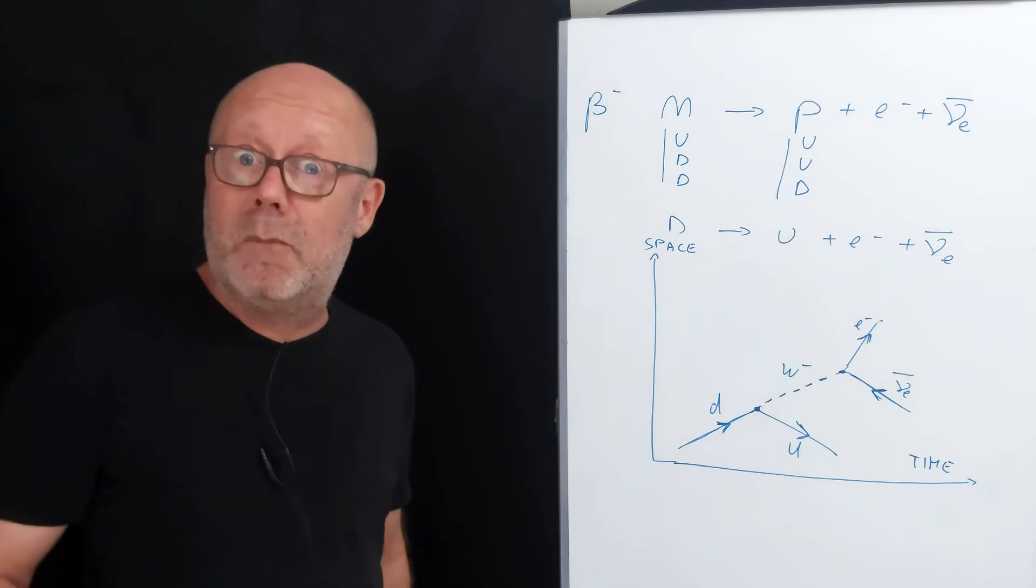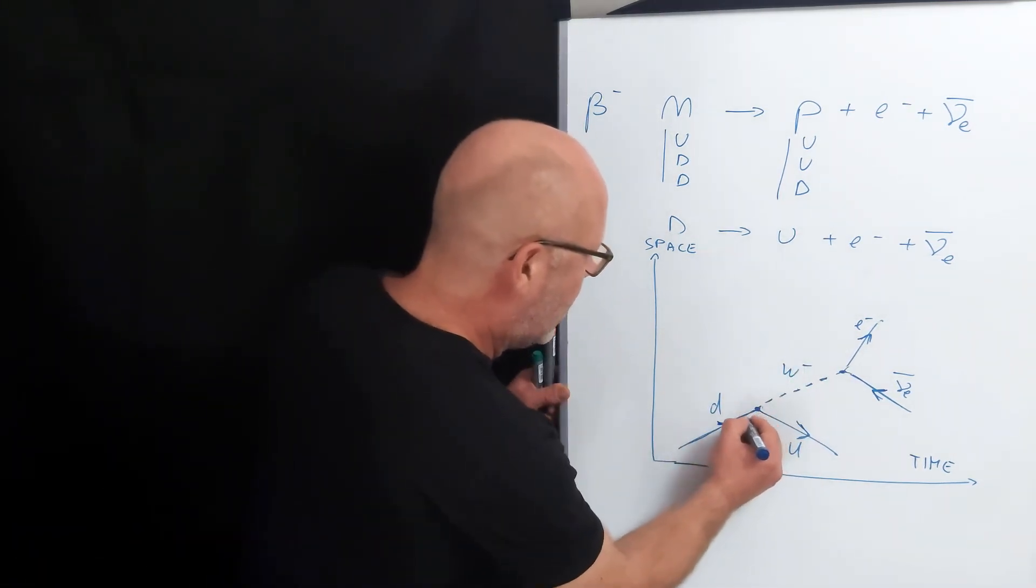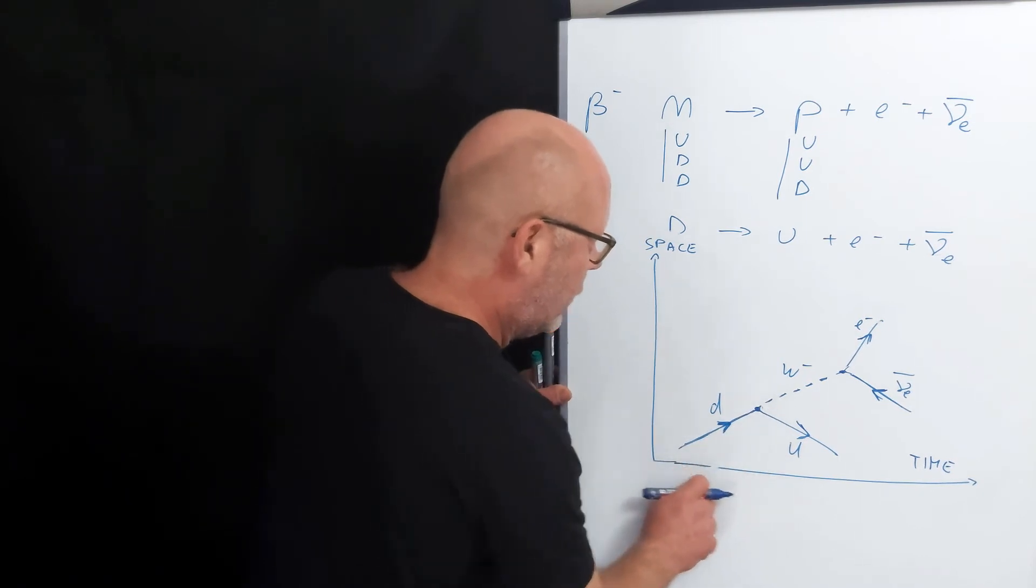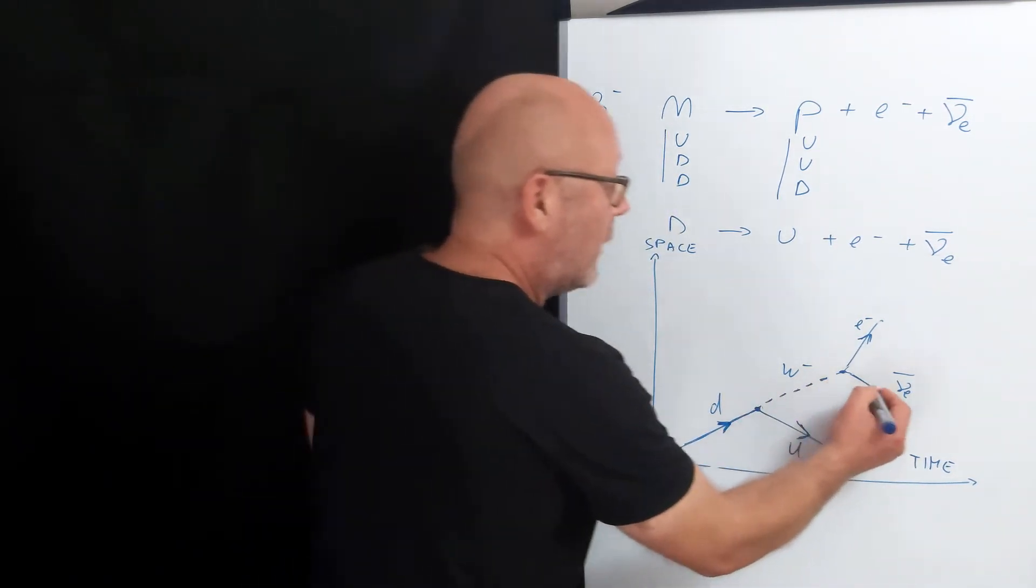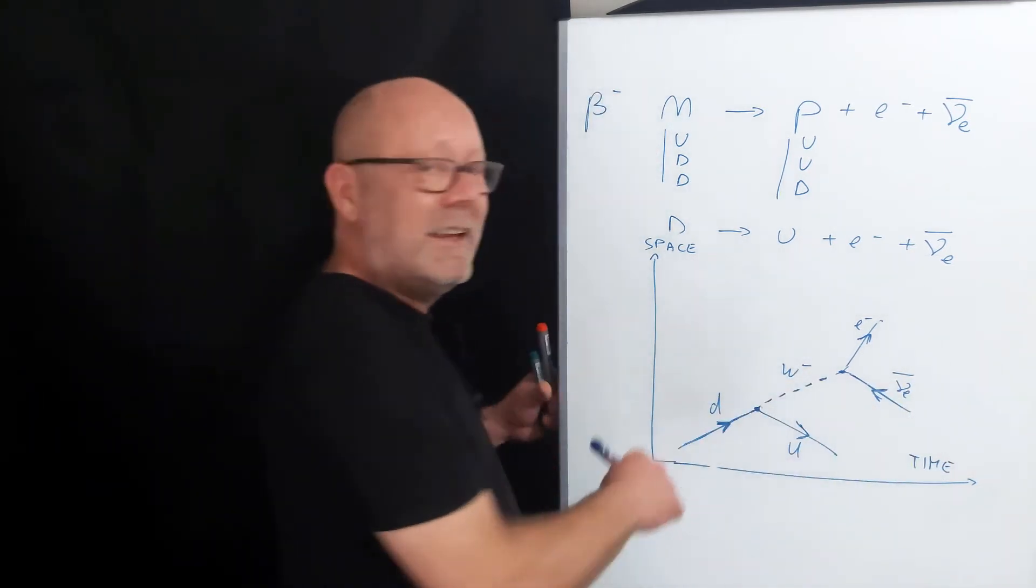What else? Oh yeah, there are the symbols. You see the down, up and electrons are represented by a bar with a narrow towards the direction of time. While the anti-particle, the anti-neutrino, is the same as the bar, but with an arrow in the other direction.